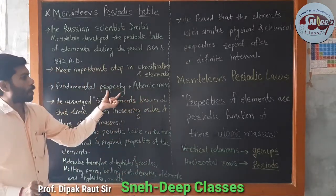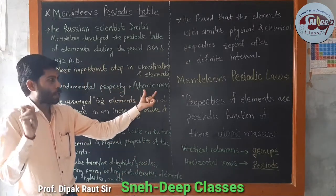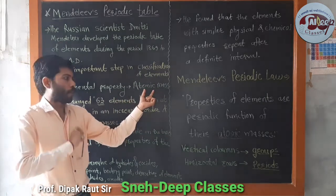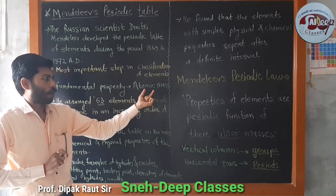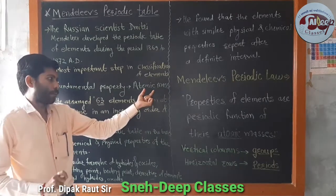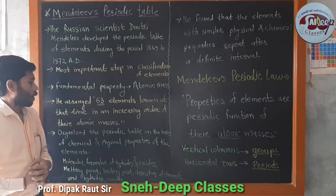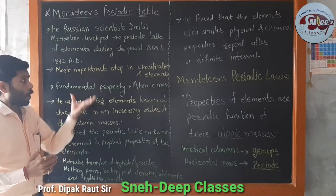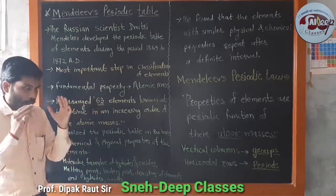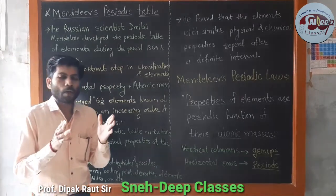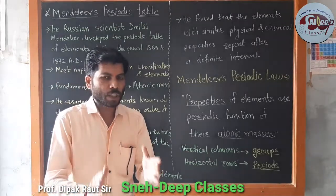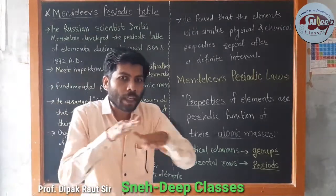So Mendeleev's fundamental property is the atomic mass, called in Marathi as Anu Vastu Manangu. When he studied in 1869 to 1872, at that time Mendeleev knew 63 elements. Within 63 elements, he kept organizing the table.